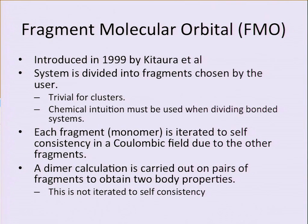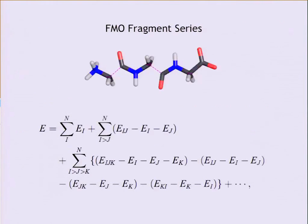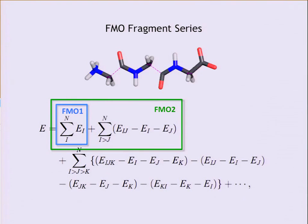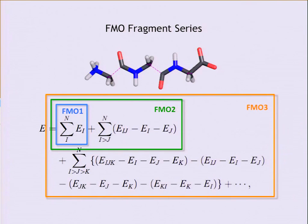The dimer calculation is not iterated to self-consistency — it would be very expensive, and it's treated as a small correction on top of the monomer result. Schematically, we sum up the individual pieces to get the total system energy. FMO1 is just the sum of monomer energies — not very accurate and rarely used. Adding dimer contributions and subtracting the monomer energies gives FMO2, which is the standard level. If three-body properties are important — like in water — we can do FMO3, with some extra algebra to avoid double counting.